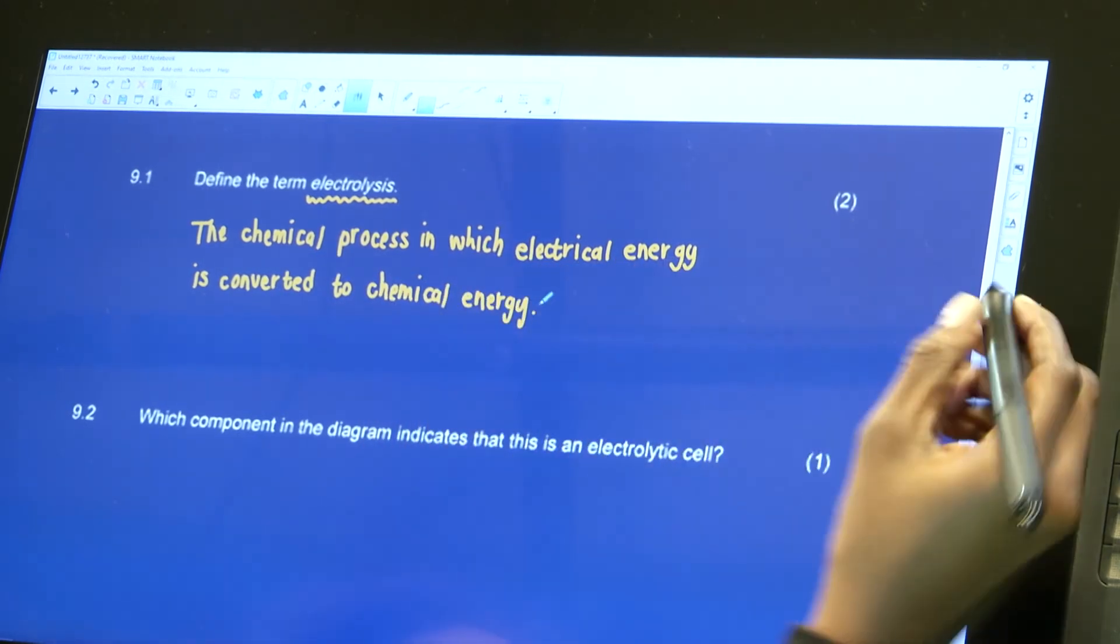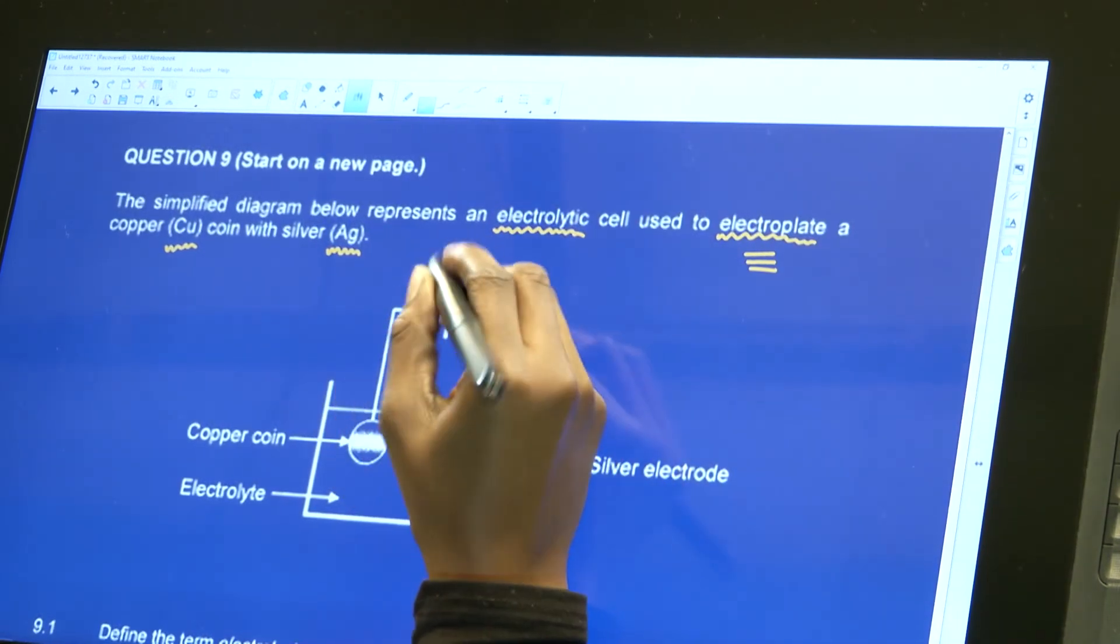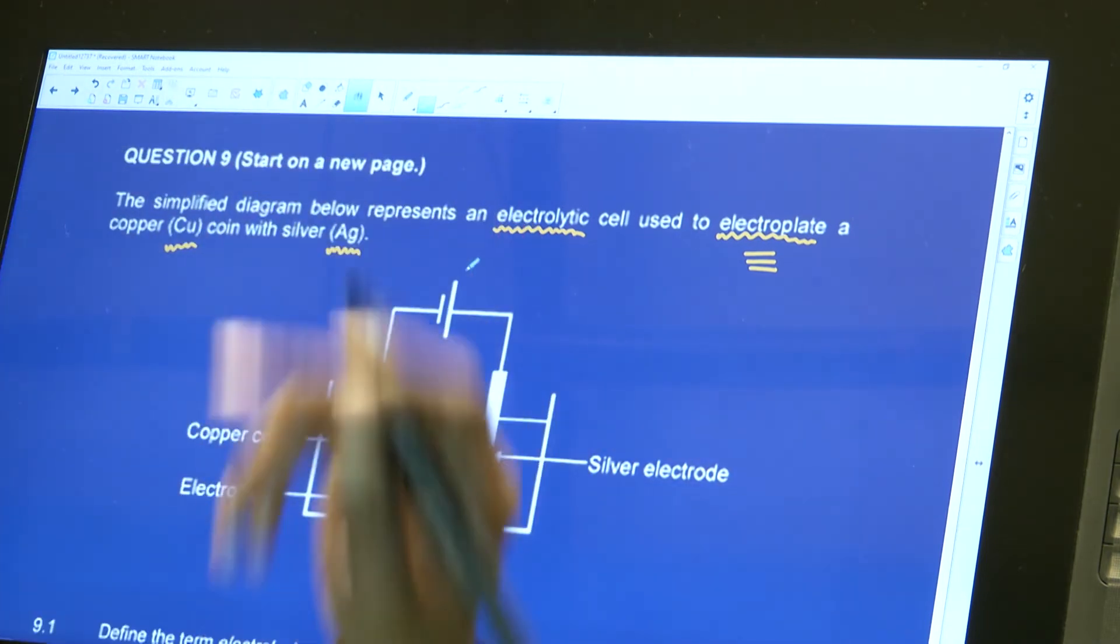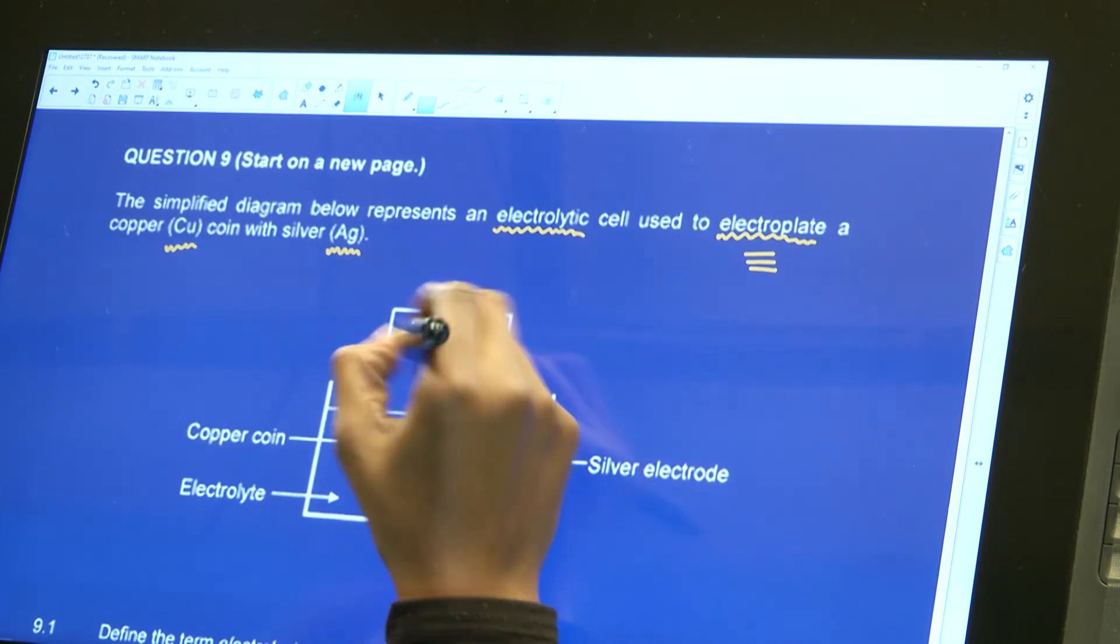Which actually makes sense. I want to go back to the diagram. I see that I've got a cell there. It would have been a battery if I had more than two cells, but in this case, this is a cell.